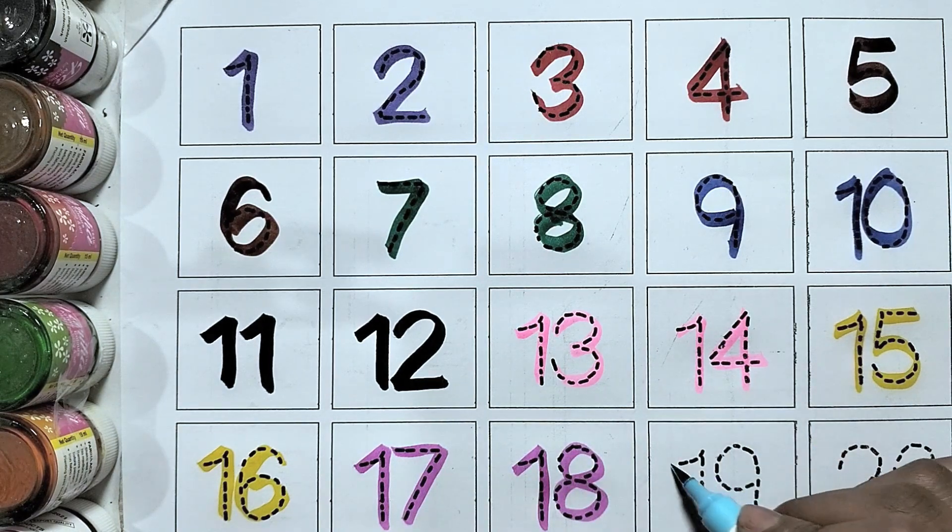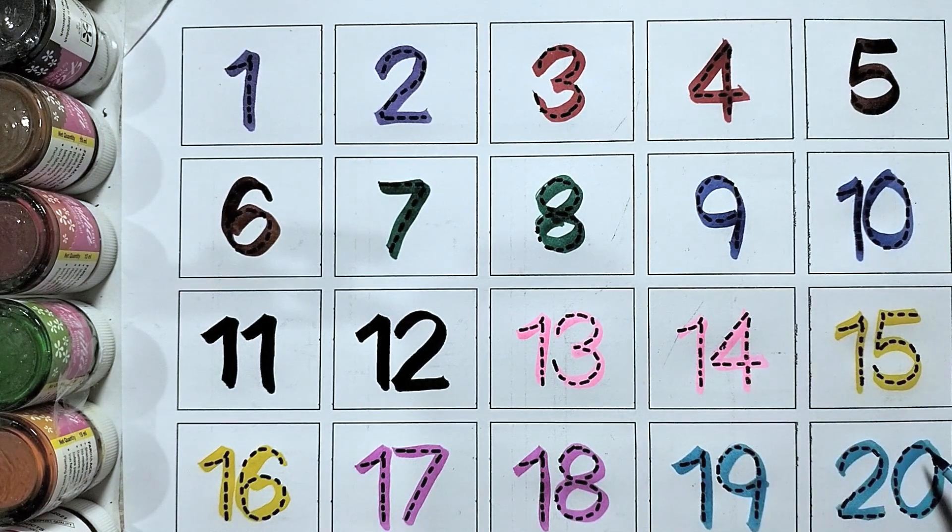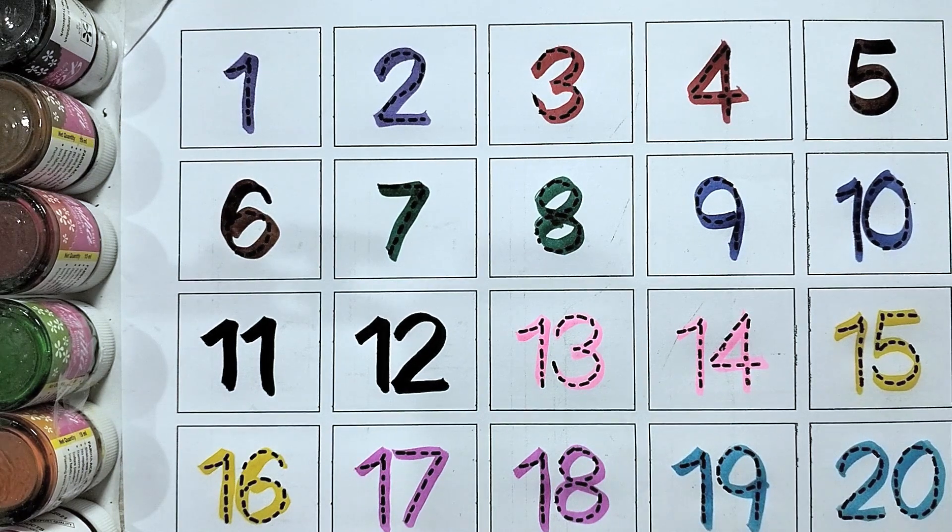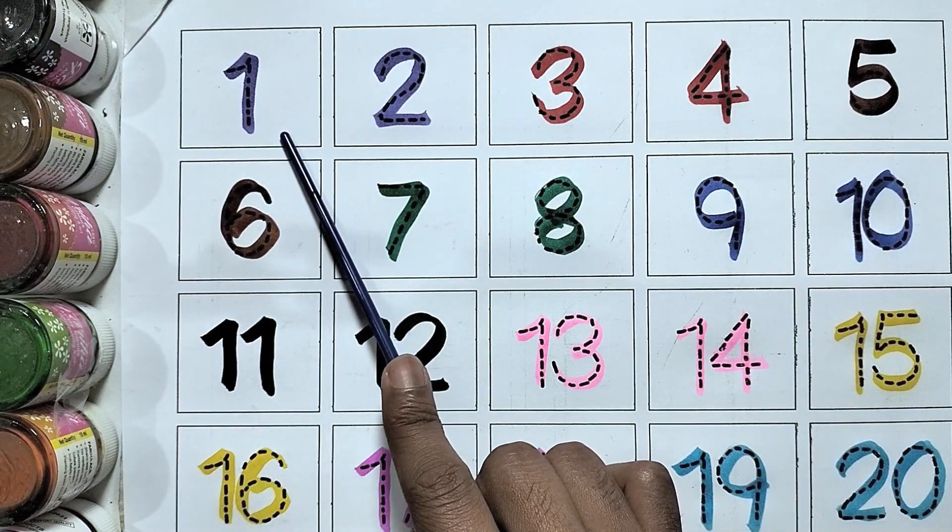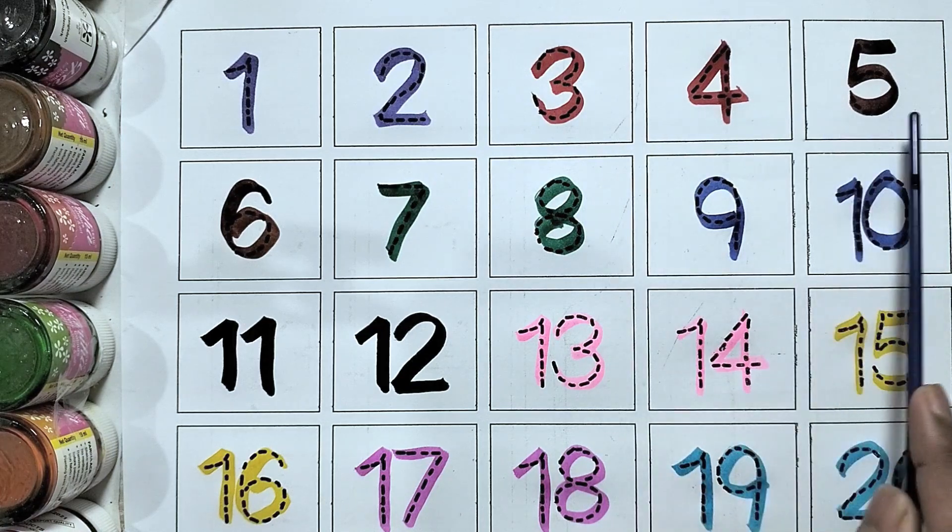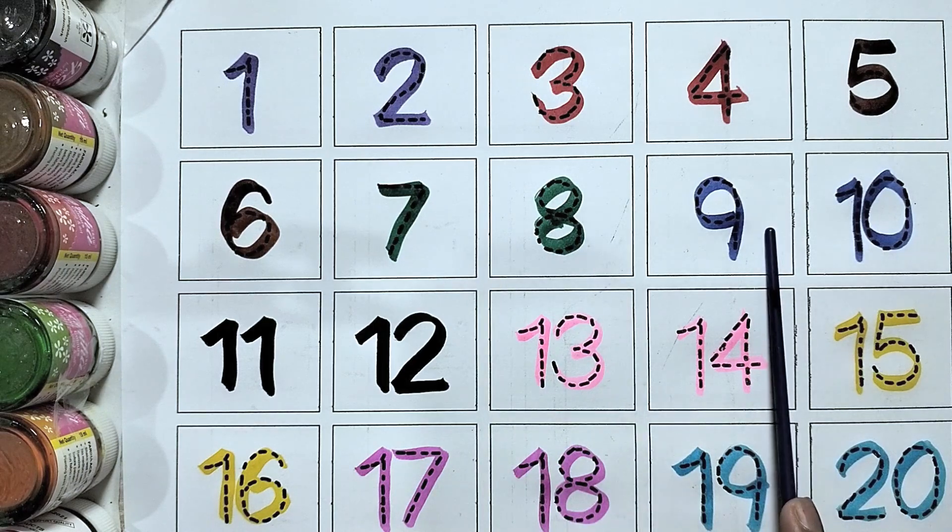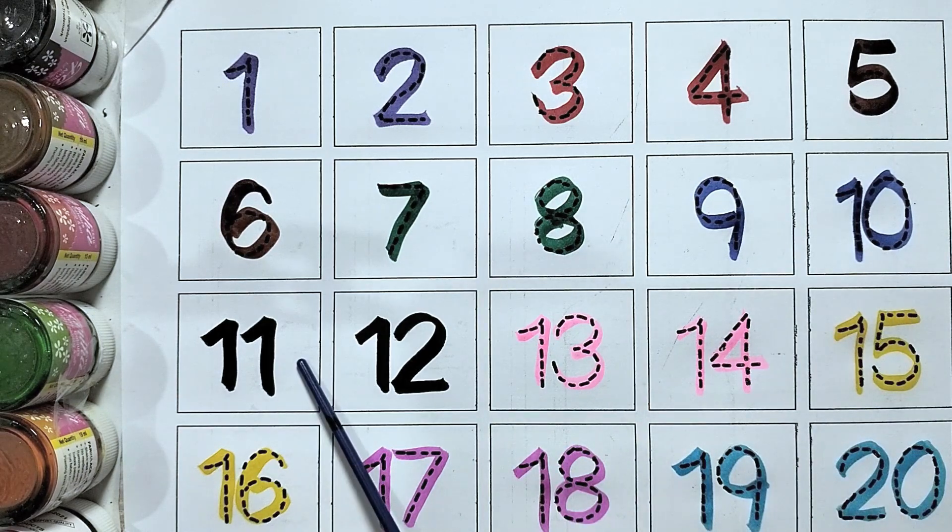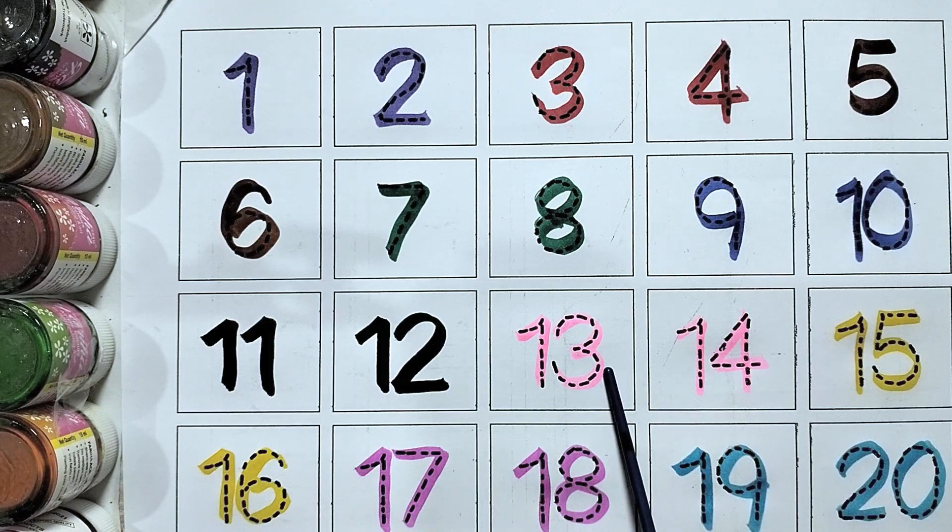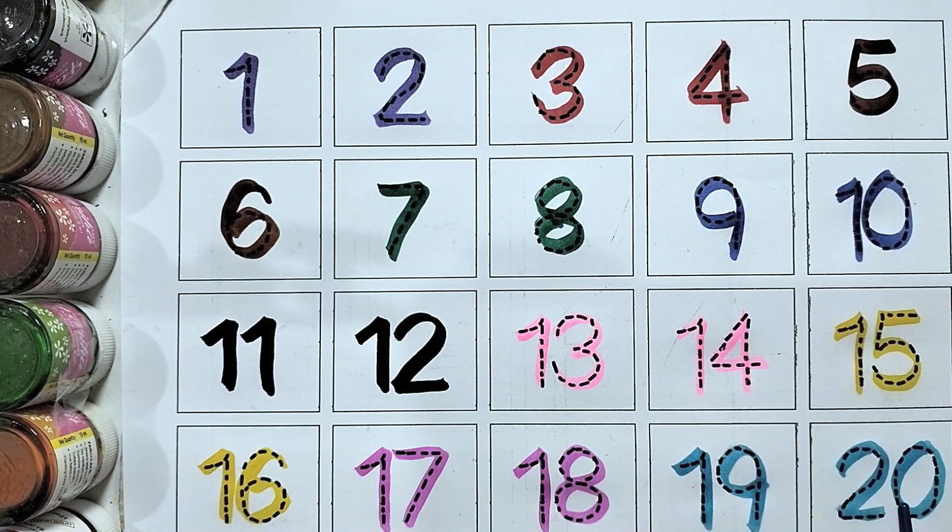Eighteen, nineteen, and twenty. Let's again: one, two, three, four, five, six, seven, eight, nine, ten, eleven, twelve, thirteen, fourteen, fifteen, sixteen, seventeen, eighteen, nineteen, and twenty.